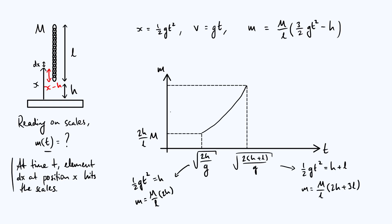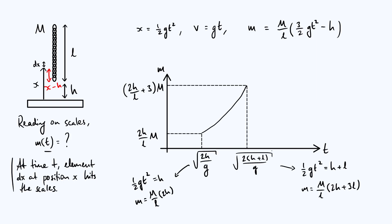For the maximum mass reading at time t₂: ½gt² = h + L, so 3/2 · gt² = 3h + 3L. Substituting back gives m = (M/L)(3h + 3L − h) = (M/L)(2h + 3L), which I'll rewrite as (2h/L + 3)·M. Beyond t₂, the entire chain is sitting stationary on the scales and the reading is simply the actual mass M — so the graph shows a horizontal line at M.